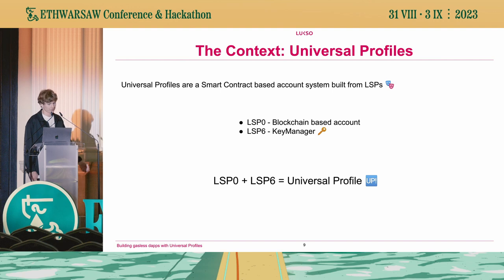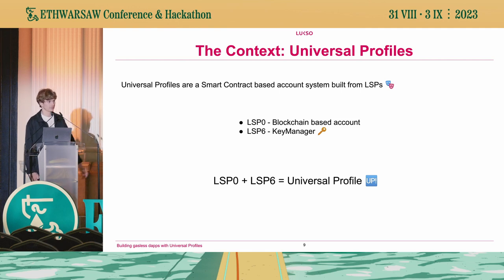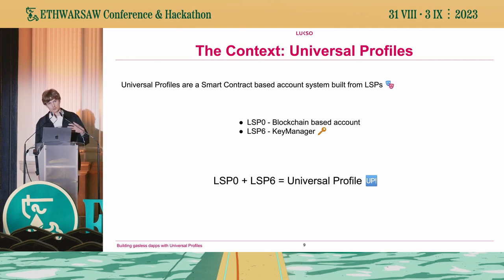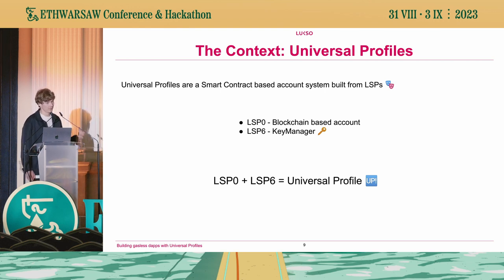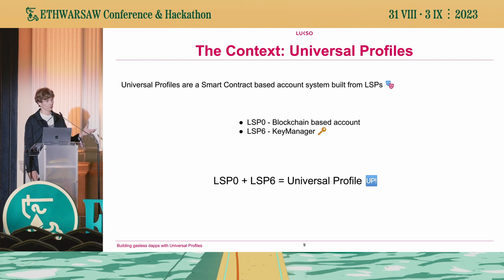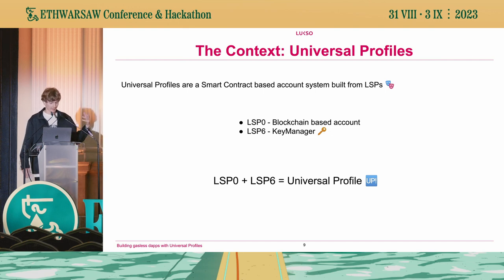Our flagship product is what we call Universal Profiles. The Universal Profile is a smart contract-based account — different from a MetaMask EOA key. It's a fully functioning smart contract account system that comes with features like profile pictures, usernames, and all the features we're used to from a Web2 experience like Facebook and Twitter, now coming natively to the blockchain. The Universal Profile is composed of two different smart contract standards: LSP0, which is the face of your smart contract and holds the profile metadata, and then a key manager — a fully upgradable permission system with scoped keys that control different aspects of your Universal Profile.